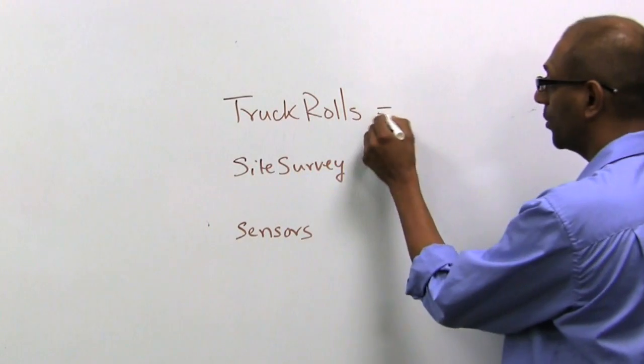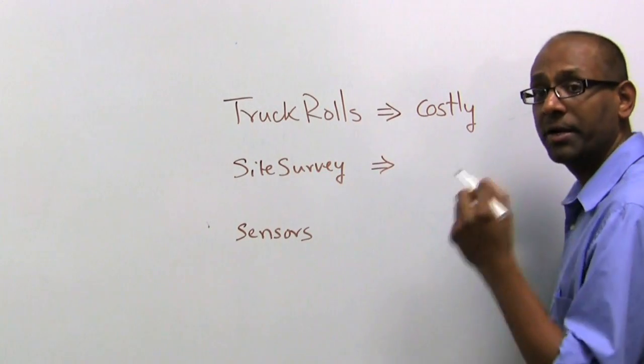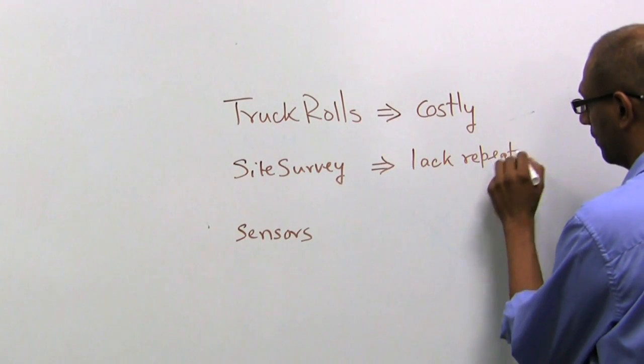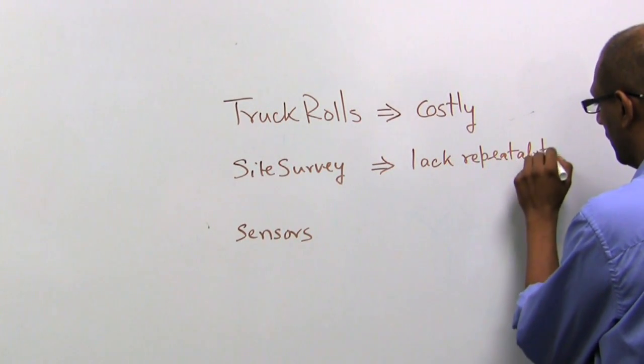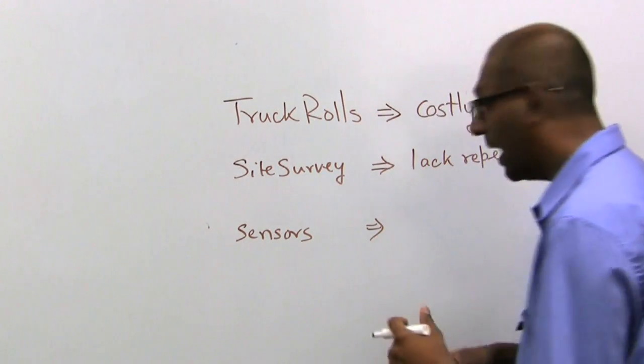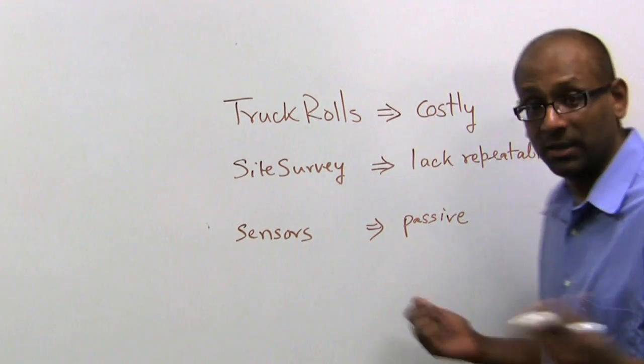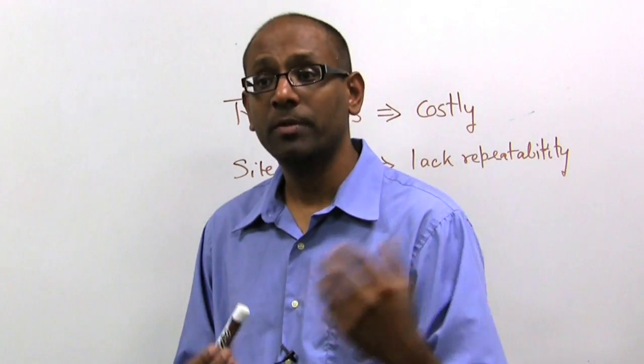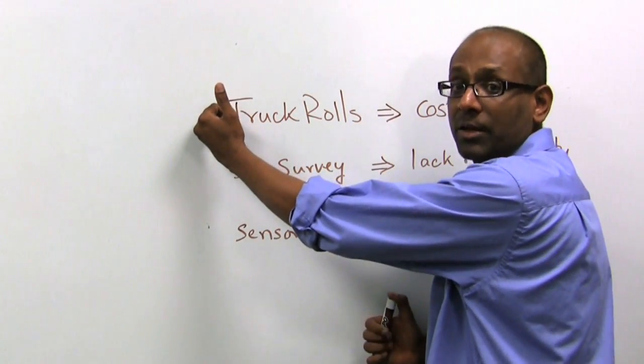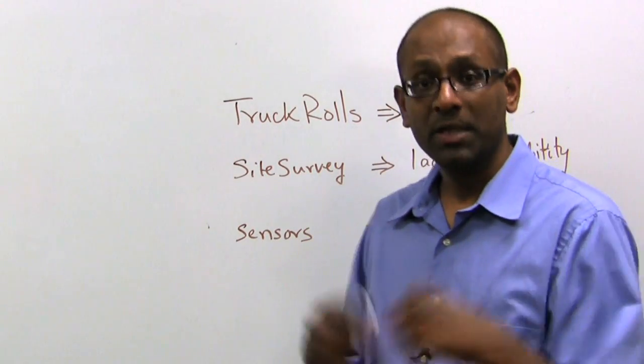Now notice that truck rolls are very expensive. Site surveys are done at a point in time, therefore they lack repeatability. And sensors, while they do capture what's going on over the air, are inherently passive and reactive. Because if there is no traffic going on, there's nothing to sense. So how do you know that there was a problem before it happens if all you're doing is passively monitoring the network? Or all you're doing is reacting to it after the problem happened or doing your checks at a point in time but not actually doing a check when the problem happens.